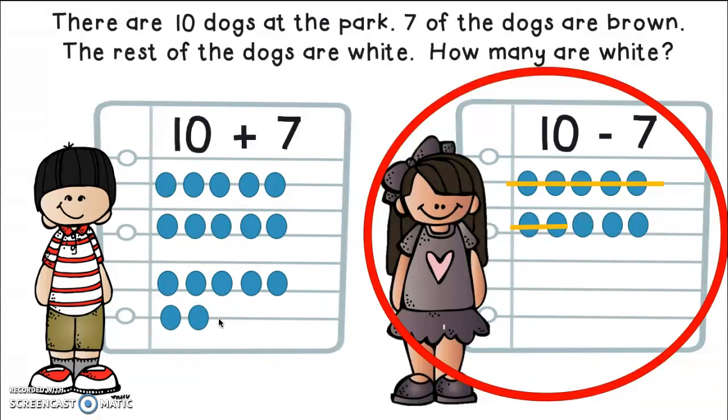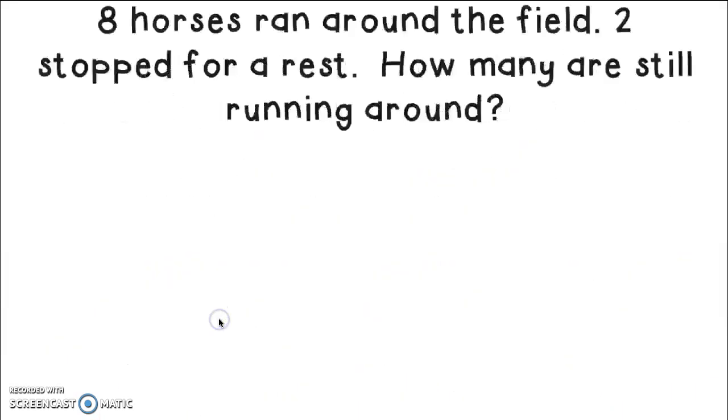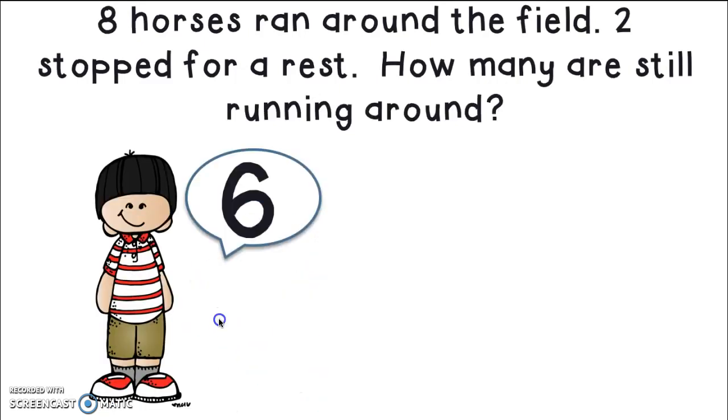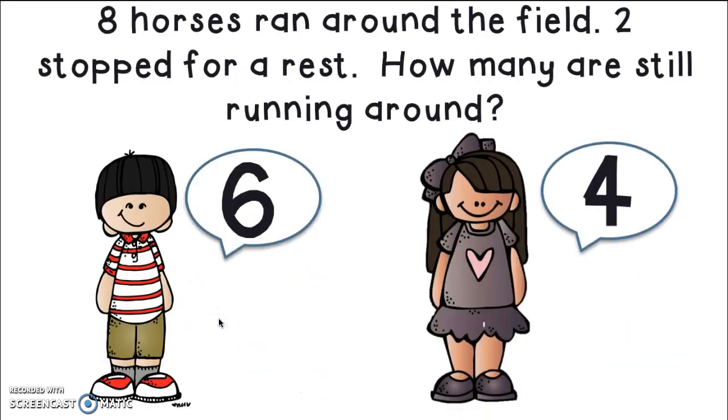Should we try another one? This time I had eight horses ran around the field. Two stopped for a rest. How many are still running around? Right away, of course, Shane said six and Kara said four. I don't know. Are you thinking already? Can you have an idea of who's going to be correct here? Shane or Kara? Let's find out. Let's see what they did. Let's look at their work.